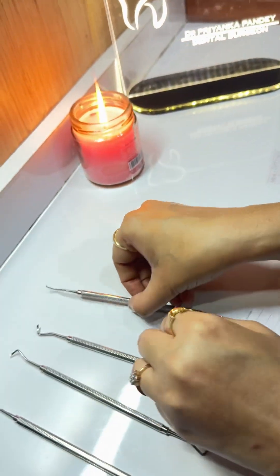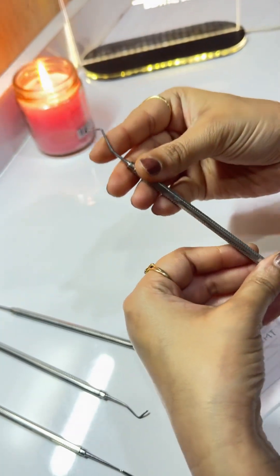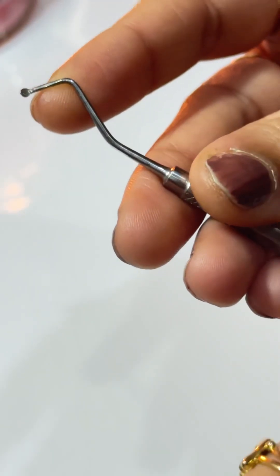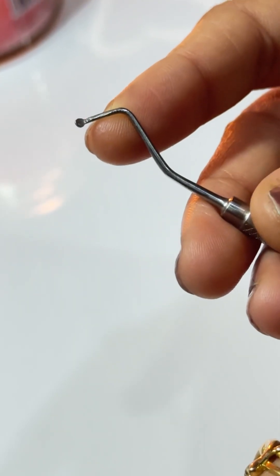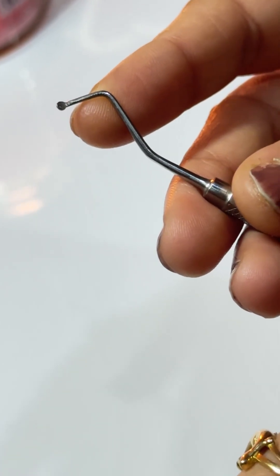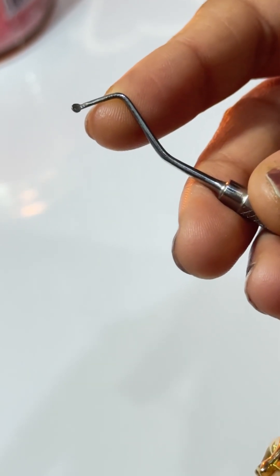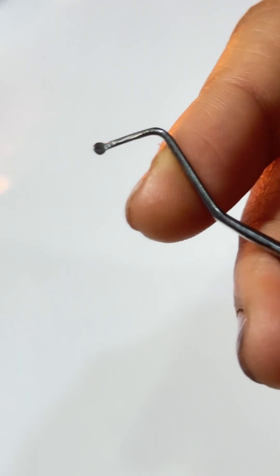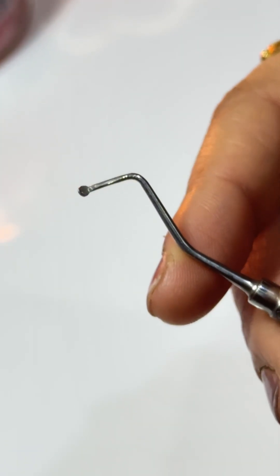Now we come to the last instrument, the spoon excavator. Its function is it is used for spooning or scooping of softened carious material. It is also used in carving amalgam or direct wax patterns.